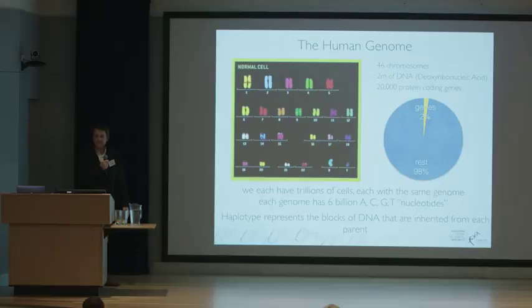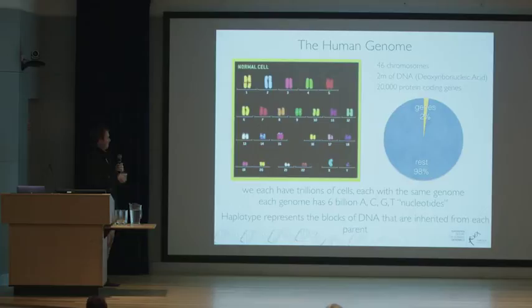I want to make the point about the haplotype, which is a block of DNA that you inherit from either your mum or your dad. That's going to be important because we need to resolve haplotypes properly for a diagnosis of FSHD. If you stretch out the DNA end to end, it's about 2.1 metres — it's a long molecule.